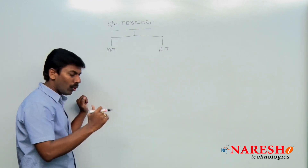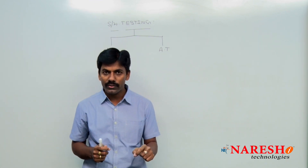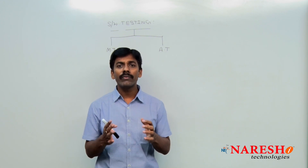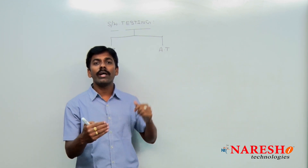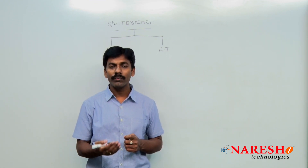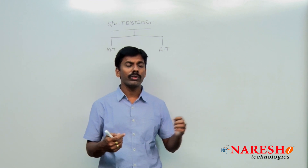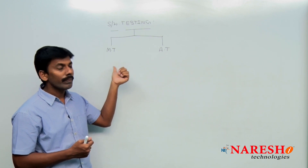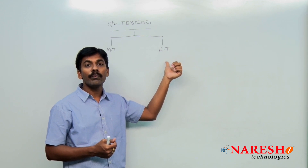Both are testing only. The difference is: in manual testing, we are doing the testing ourselves. We have to open the application, enter the data, enter the username, enter the password — everything needs to be done with the help of human interactions. In automation testing, it is done with the help of a tool.